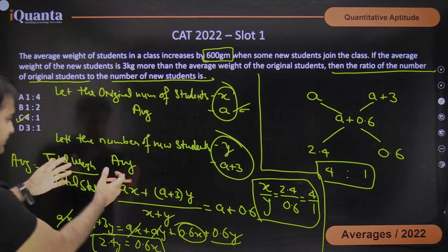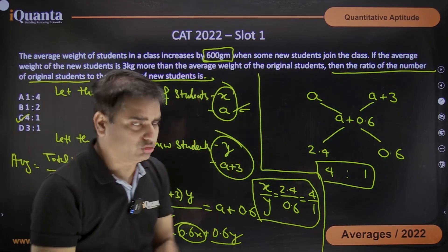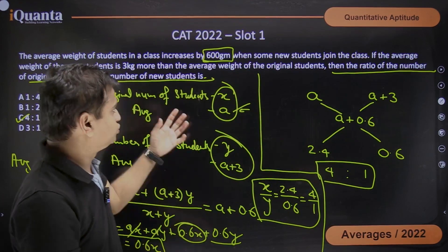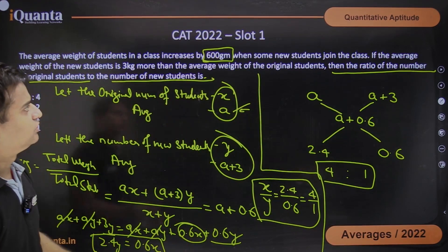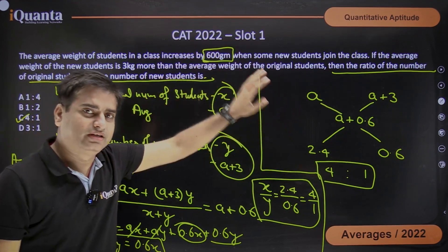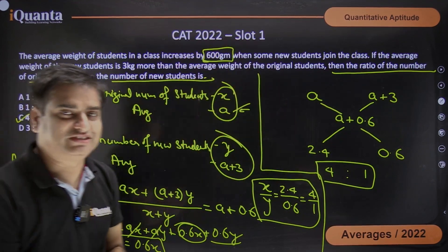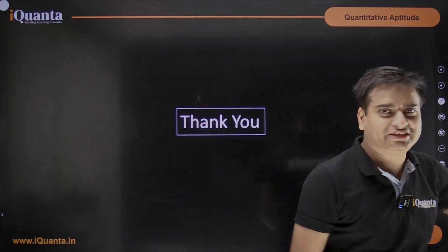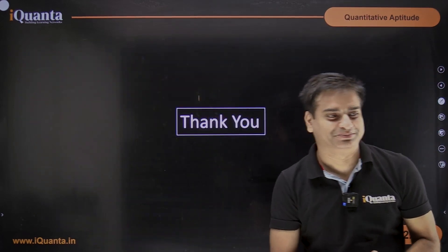So this is all about the question. This is the traditional approach, and this is the new, easier, better approach to solving the question. This was the question of CAT 2022 Slot 1 and the topic is averages. Thank you very much, have a nice day. Bye-bye, take care.